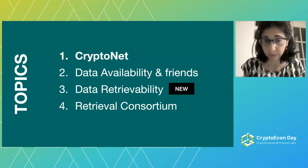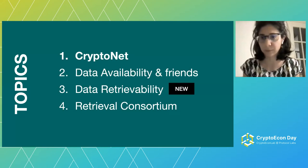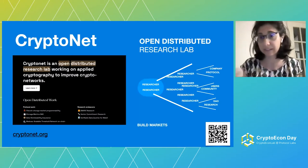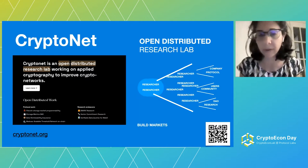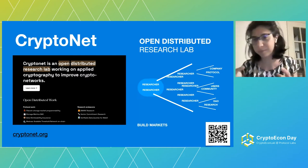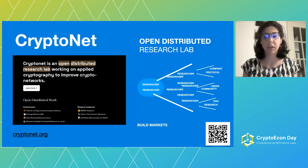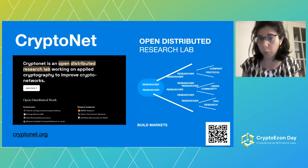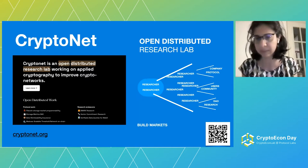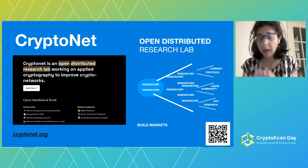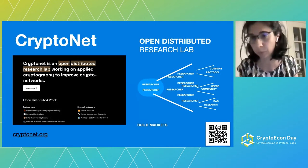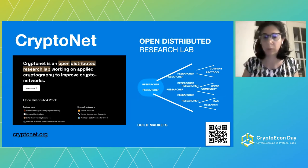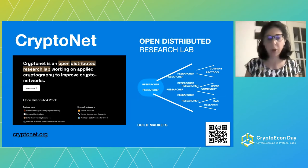This is the agenda for my talk. The first topic I want to talk about briefly is CryptoNet. CryptoNet is the lab I'm a researcher in at Protocol Labs, and we are an open distributed research lab. This means that we are a small set of researchers that work on research and primitives, especially cryptographic primitives that are the building blocks for Web3 and distributed storage. We also try to bring this work to the entire community and influence the research community in directions we think are important for Web3.